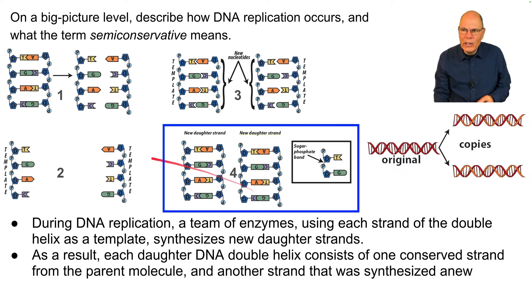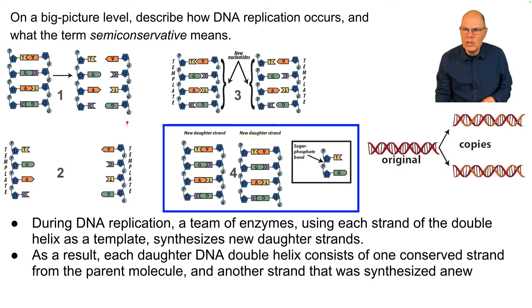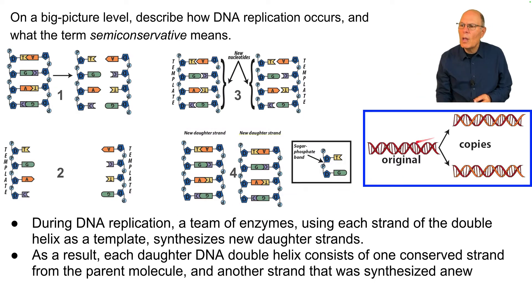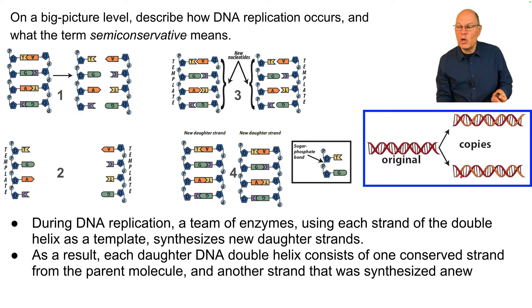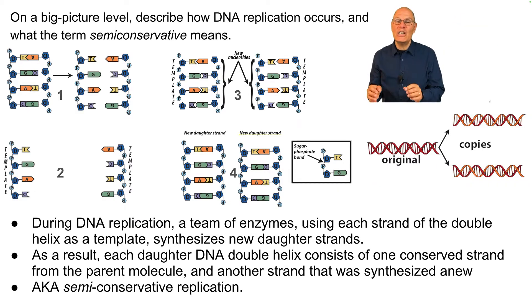In these daughter molecules, one of the strands is conserved from the parent, and the other strands are new. Semi-conservative means one strand is conserved, the other strand is new. This is represented with color coding where the parent strand has both strands colored red, and in the daughter strands, one strand is red (conserved) and one strand is orange (new). That method of replication is known as semi-conservative replication.